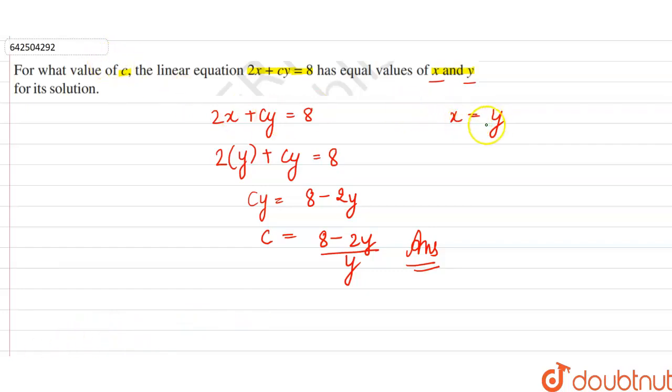Alternatively, you can substitute the value of y in the given equation. The equation was 2x + cy = 8. Substitute y = x, so 2x + cx = 8. Therefore, cx = 8 - 2x, and c = (8 - 2x)/x.